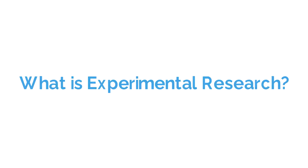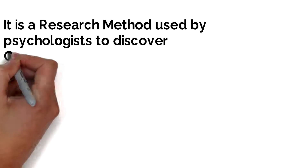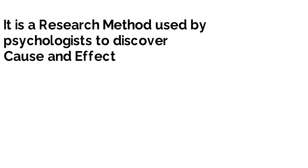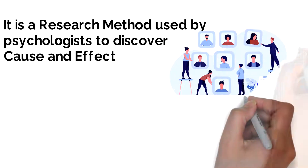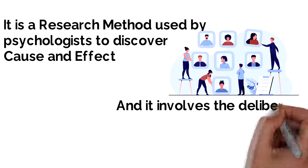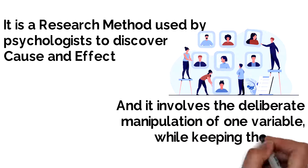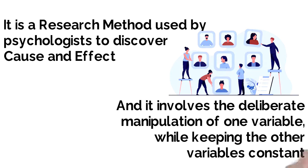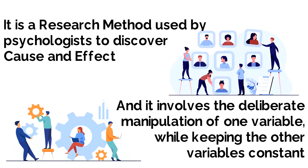An experiment is a research method used by psychologists which involves the manipulation of variables in order to discover cause and effect. It differs from non-experimental methods in that it involves the deliberate manipulation of one variable while trying to keep all other variables constant.